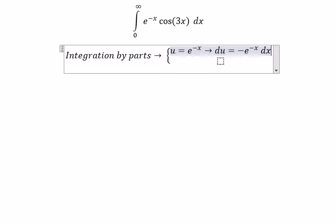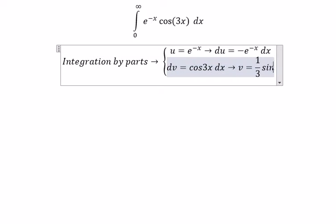dv is cosine 3x dx, so v equals one-third sine 3x.